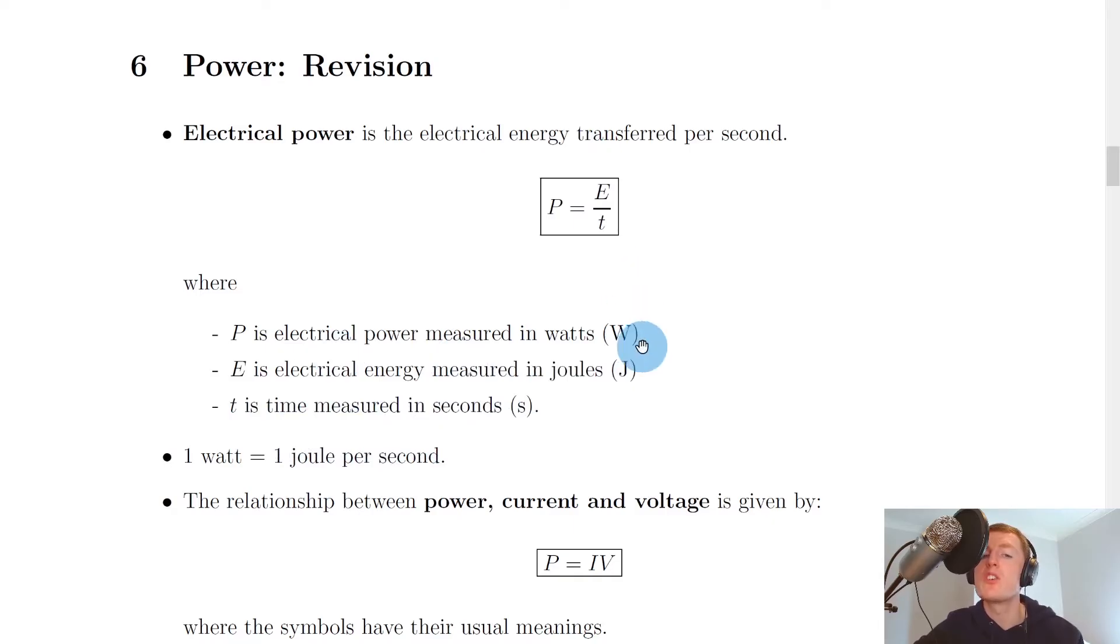So from this equation you should be able to notice that 1 watt = 1 joule per second. So if we look at the units of this equation, we have watts on this side, joules for energy, and seconds for time, so we can say that 1 watt is the same as 1 joule per second.